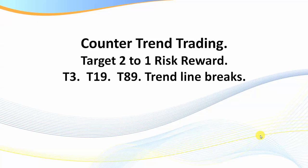If you're a day trader scalping the market like CL, we're about to look at the 233 tick chart — you have so many opportunities that a couple of different setups keeps you very busy. If you want to trade more, increase the timeframe. For counter-trend trading you want at least a two-to-one risk/reward. The T3, T19, T89, and trendline breaks are generally counter-trend strategies. You can be right 50% of the time and still make great money with a higher risk/reward ratio.